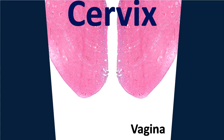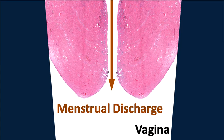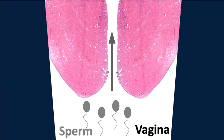Here's a closer look at the cervix. Menstrual discharge passes through the cervix. During reproduction, sperm will travel through the cervix as well.